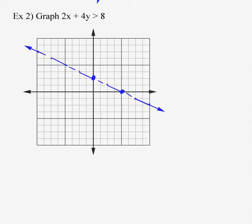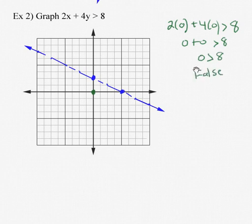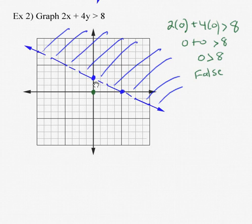To decide which side to shade in — whether we want everything below or above the line — I like to pick the point (0, 0). So 2 times 0 plus 4 times 0 to see if that's greater than 8: is 0 plus 0 greater than 8? That's false. So the point (0, 0) is not on the side of the line I want to shade. It's the other side. We shade in everything on the other side of the line. That's our graph of 2x plus 4y is greater than 8, with a dotted line signifying everything up to but not including the line itself.